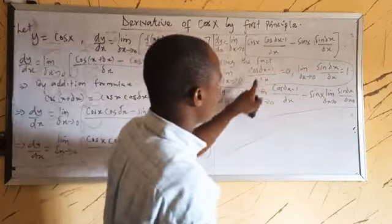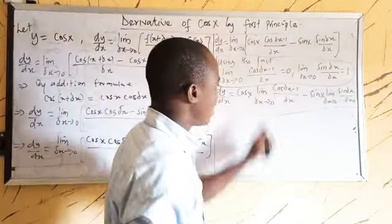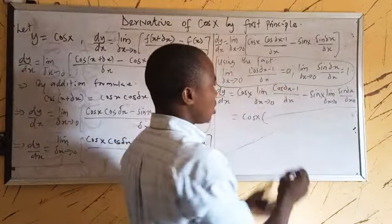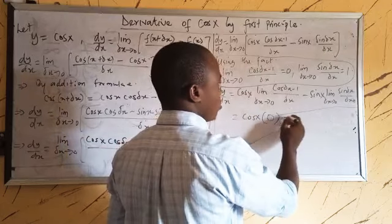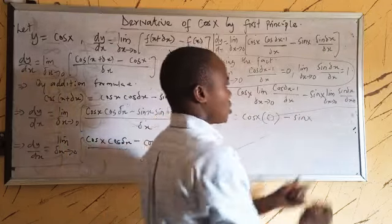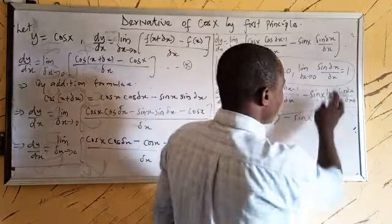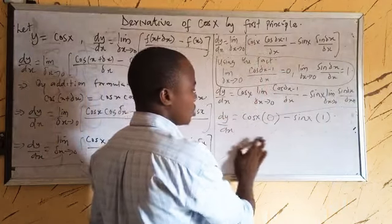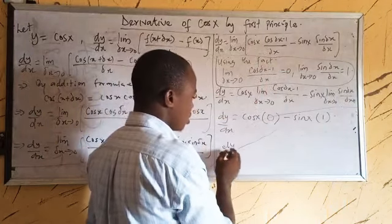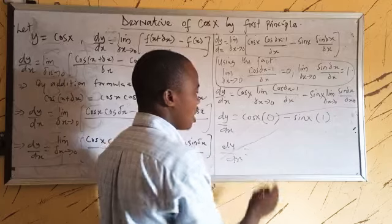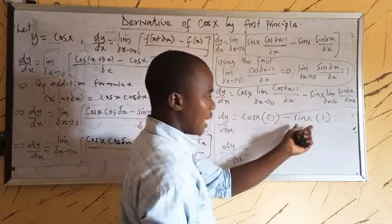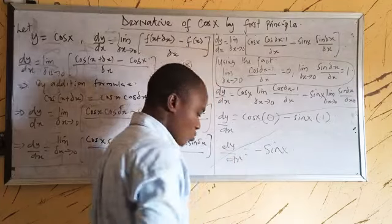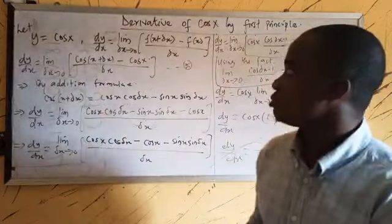Applying the results: cos(Δx) minus 1 over Δx gives zero, so cos x times zero is zero. Then minus sin x times the limit of sin(Δx) over Δx, which gives one. So dy/dx equals zero minus sin x times one, which gives us minus sin x. This is the solution.